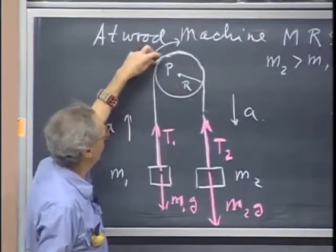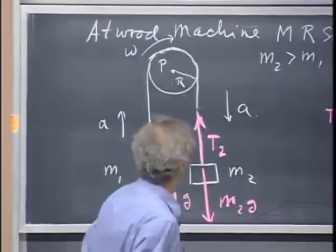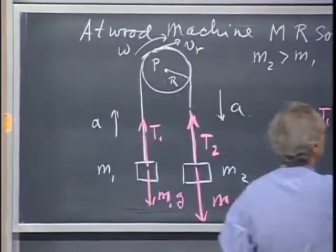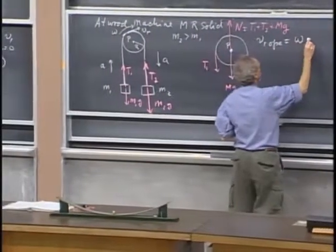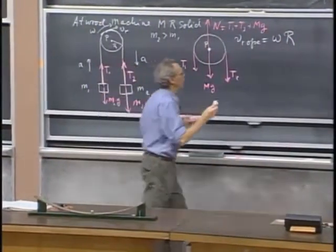That's what it means when there is no slip. That means the velocity of the rope, v of the rope, must be omega times r of the pulley. That's what no slip means.